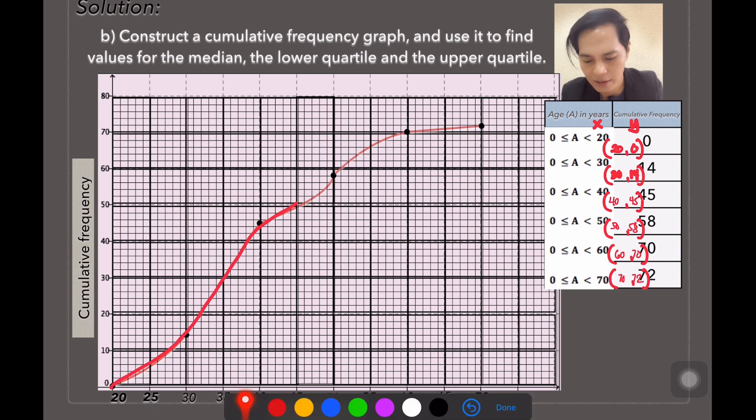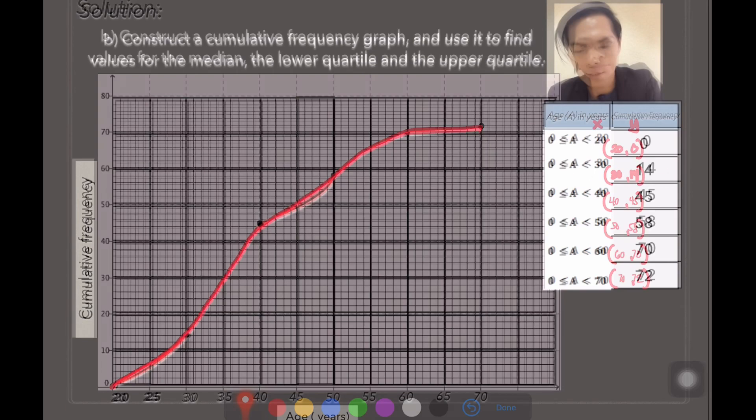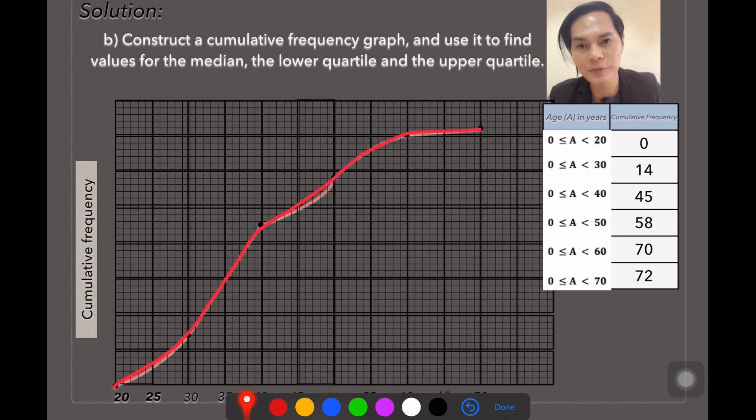So this is how it looks like. This is now the graph, the cumulative frequency graph of this given data. Now, with this given cumulative frequency graph, we can find out now the value of the median.